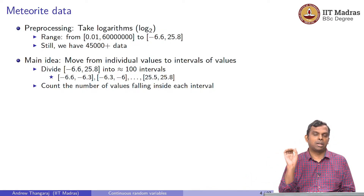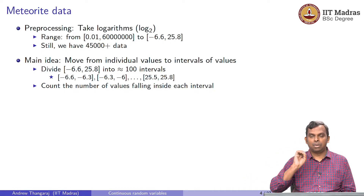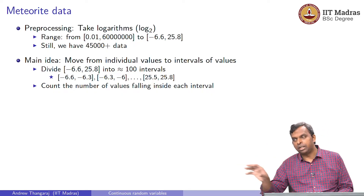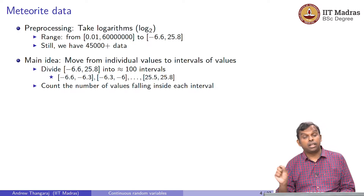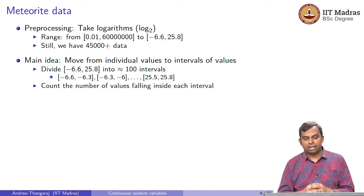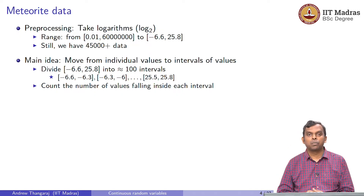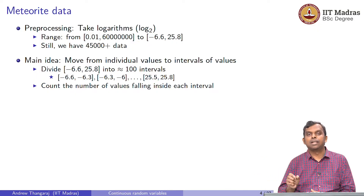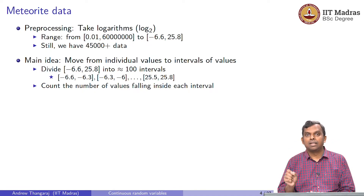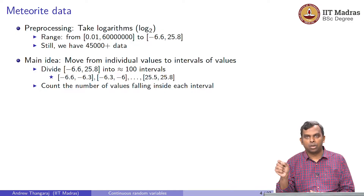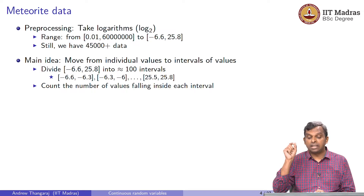So you have got to remember this. The main idea moving towards the continuous world is to start thinking of intervals. Once you put bins or intervals, you can simply count how many times your variable of interest fell in that bin — how many times the log of the weight of the meteorite fell between minus 6.6 to minus 6.3, or how many times it fell between 25.5 to 25.8. You keep track of these counts.